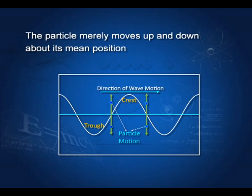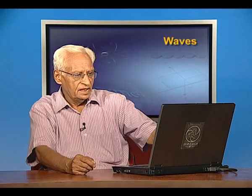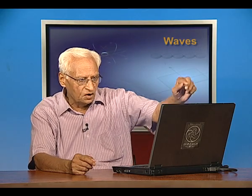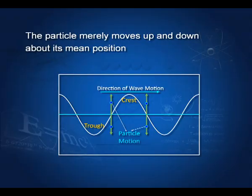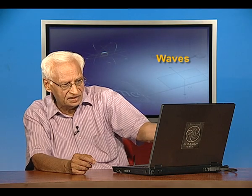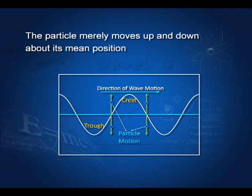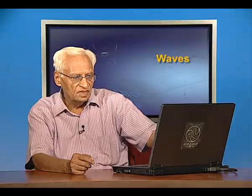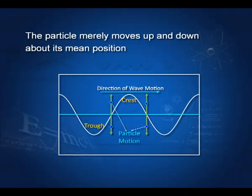A wave is represented by a sine or cosine curve; this is the direction of wave motion and the particles keep on oscillating up and down at the same place. The wave is travelling to the right. The minimum amplitude point is called a trough and the maximum amplitude point is called a crest. These are the characteristics of wave motion.